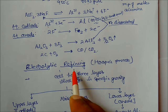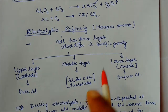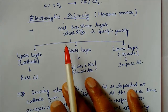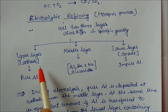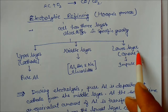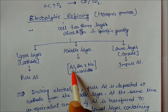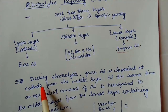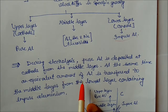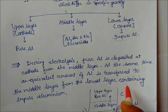For further purification, electrolytic refining is used — specifically the Hoopes process. This process has three layers differing in specific gravity. The upper layer acts as the cathode; the lower layer is the anode containing impure aluminium; and the middle layer is filled with a mixture of aluminium, barium, and sodium fluorides. During electrolysis, pure aluminium is deposited at the cathode from the middle layer.